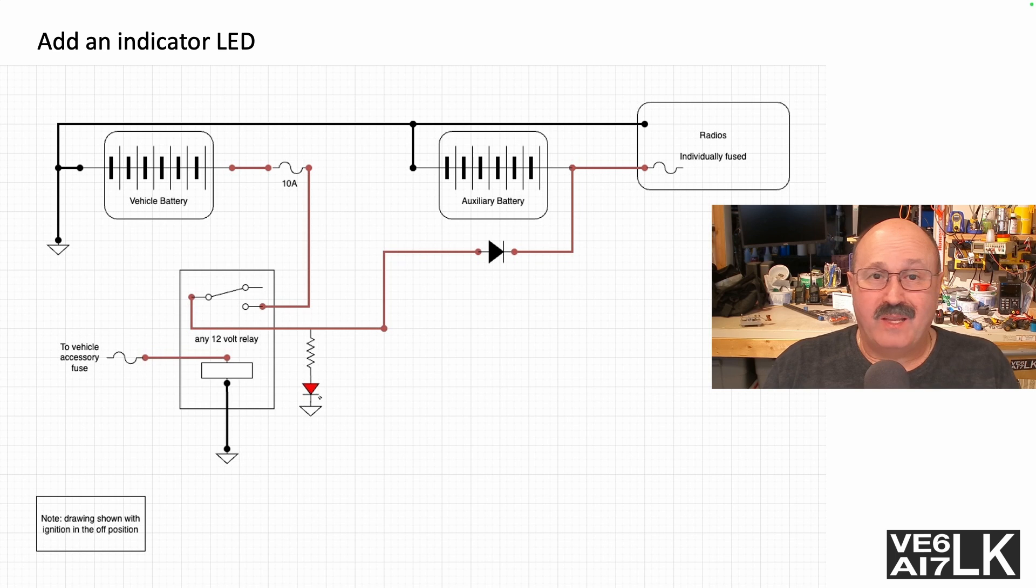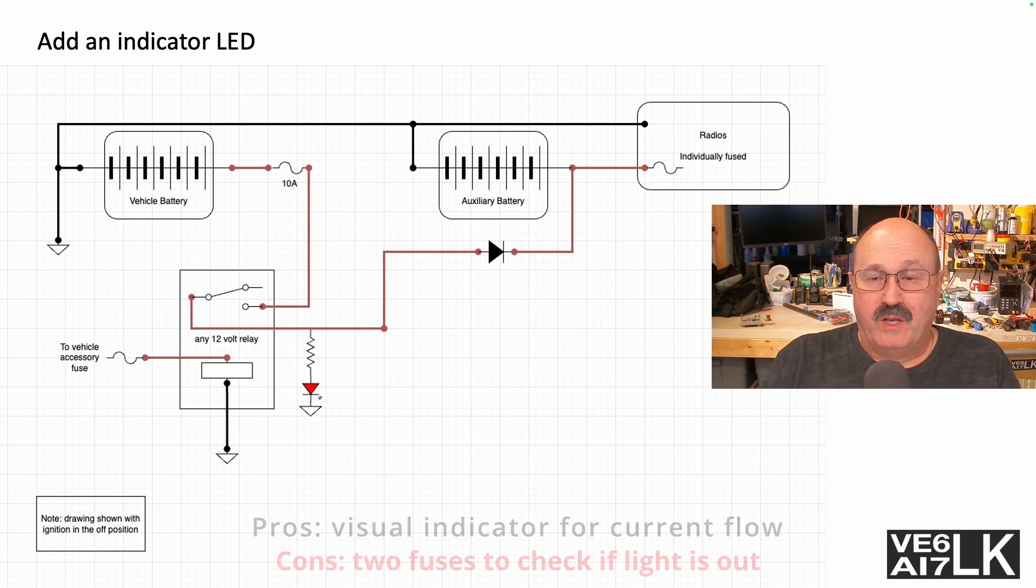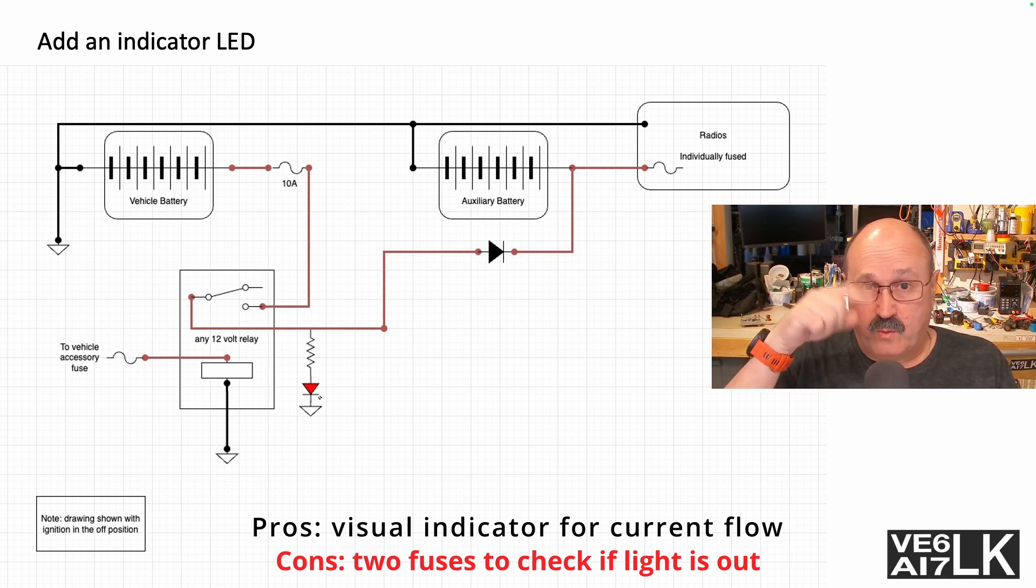So I'm just going to add a simple LED—an LED with a current-limiting resistor really is all that's needed. Just put it on the side of the relay that only energizes when the key is on, and it'll tell you if you're getting current.